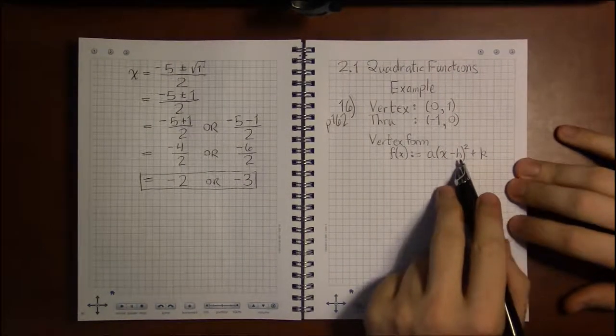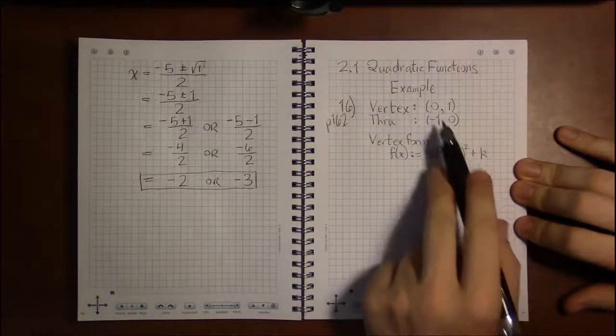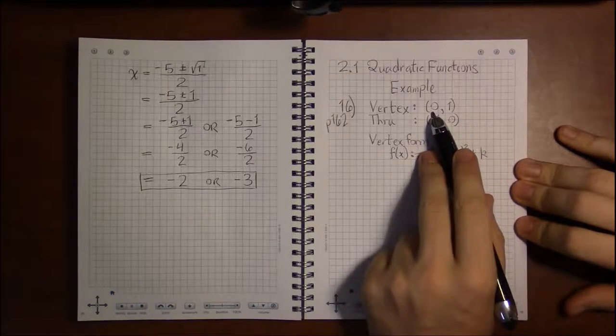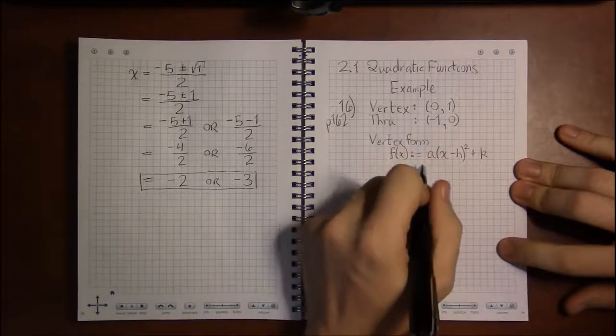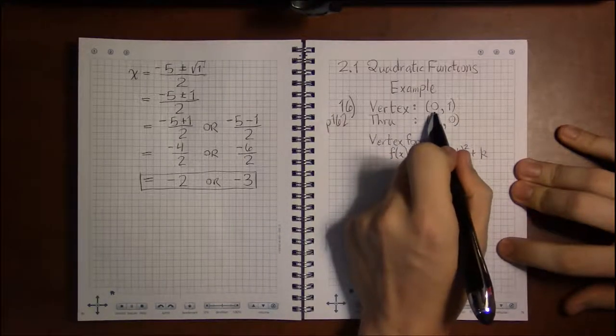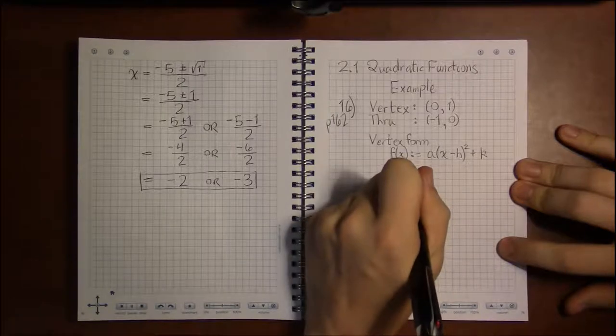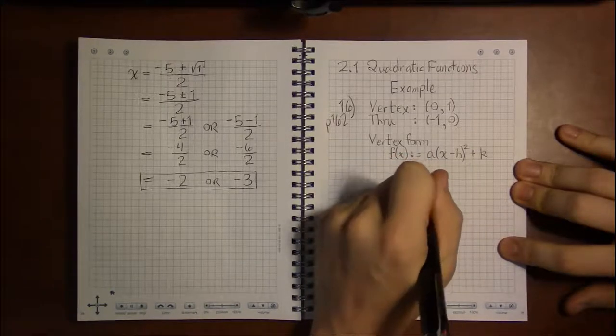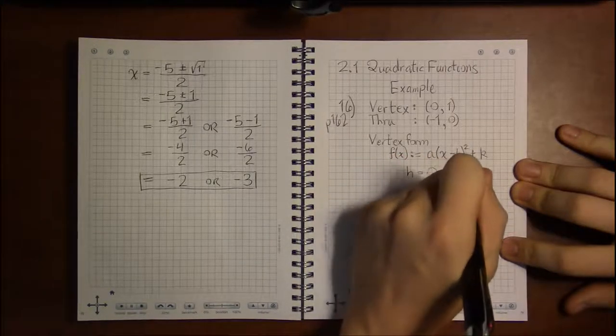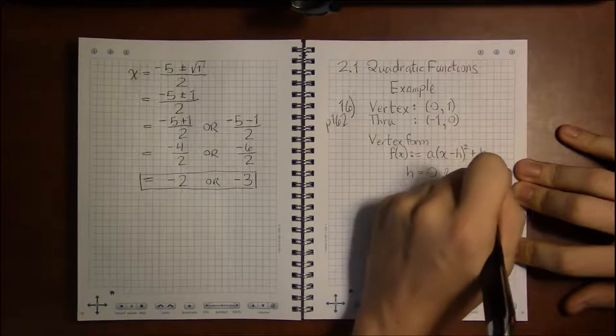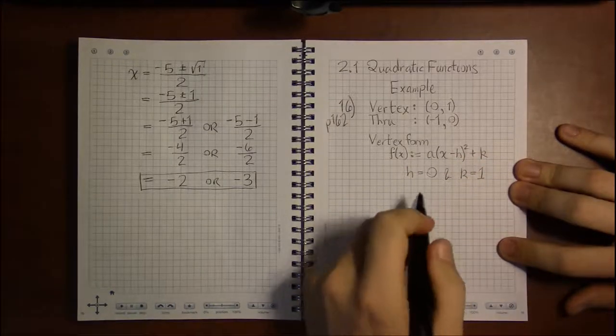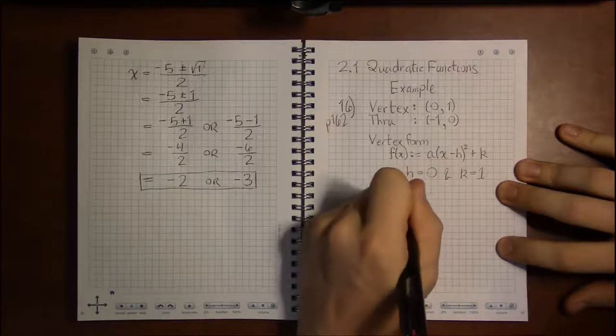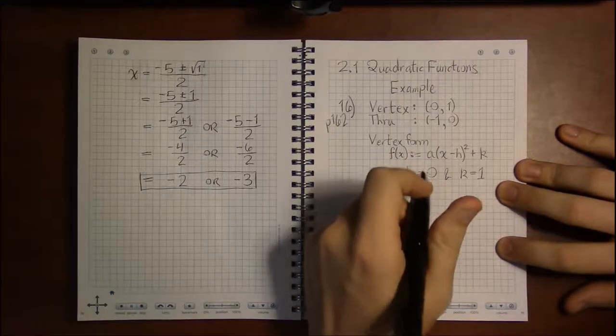h is the x-coordinate of the vertex and k is the y-coordinate of the vertex. So saying that the vertex is (0, 1) is the same thing as saying that h is 0 and k is 1, which means we know everything about this function